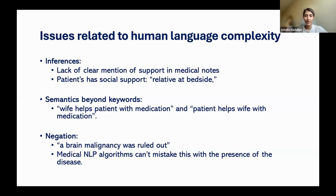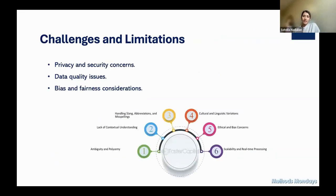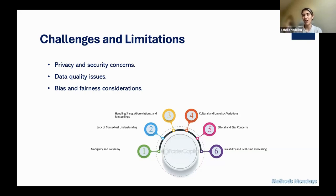NLP has advanced enormously — ChatGPT represents something close to the current ultimate goal of NLP. In the AI community, some feel we don't need NLP experts anymore. But in the healthcare sector, there are specific limitations that make things different. One is bias and fairness: healthcare data is often highly unbalanced. For instance, if a machine is trained on 90% apple images and 10% orange images, it will tend to predict apple. Similarly, unbalanced healthcare data leads to biased results.